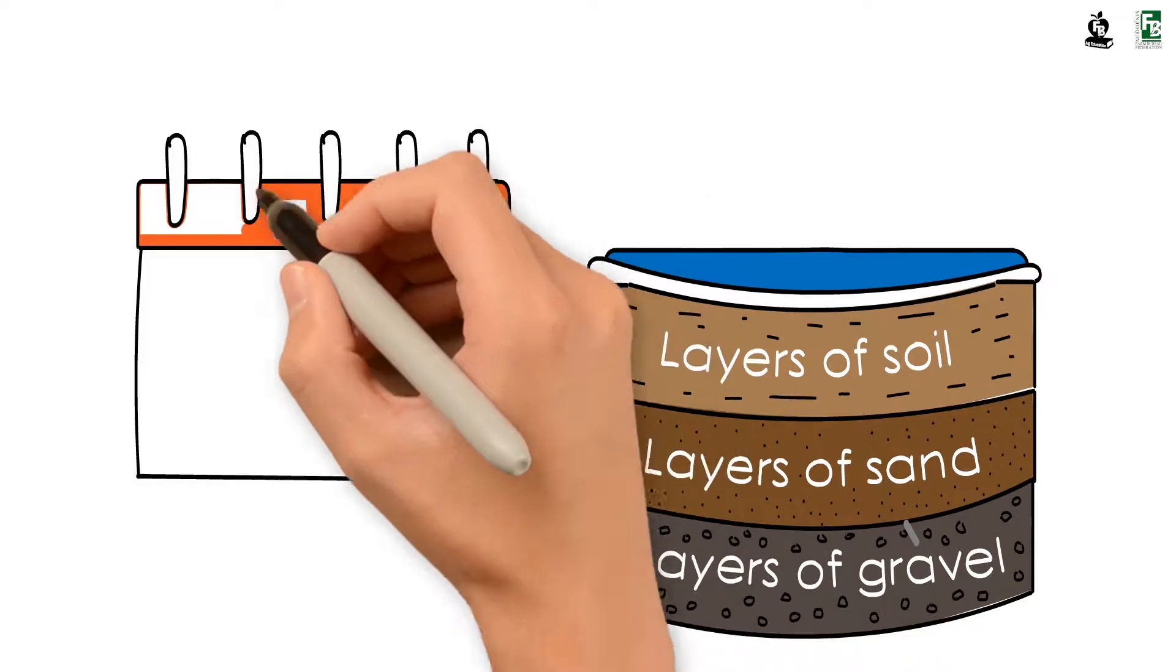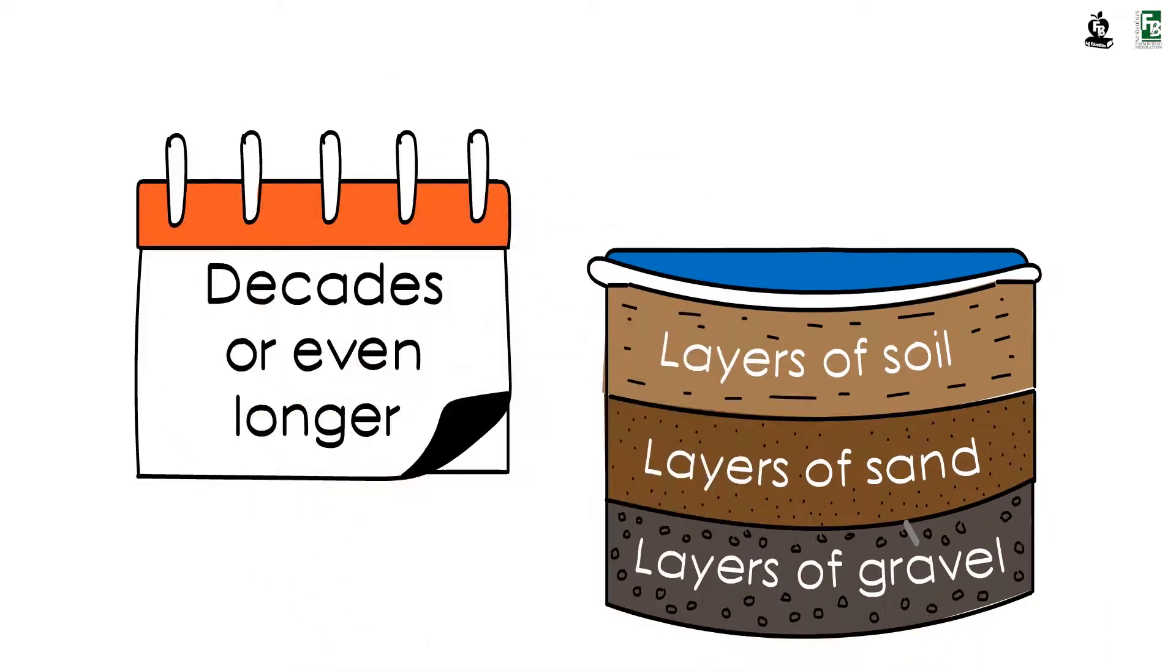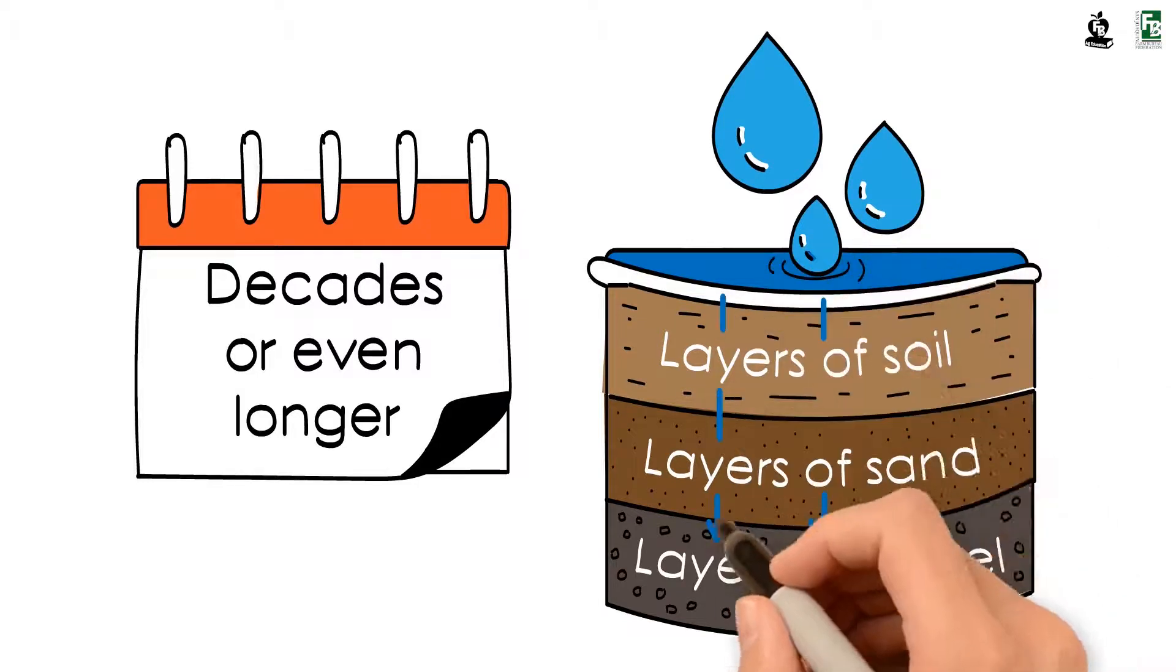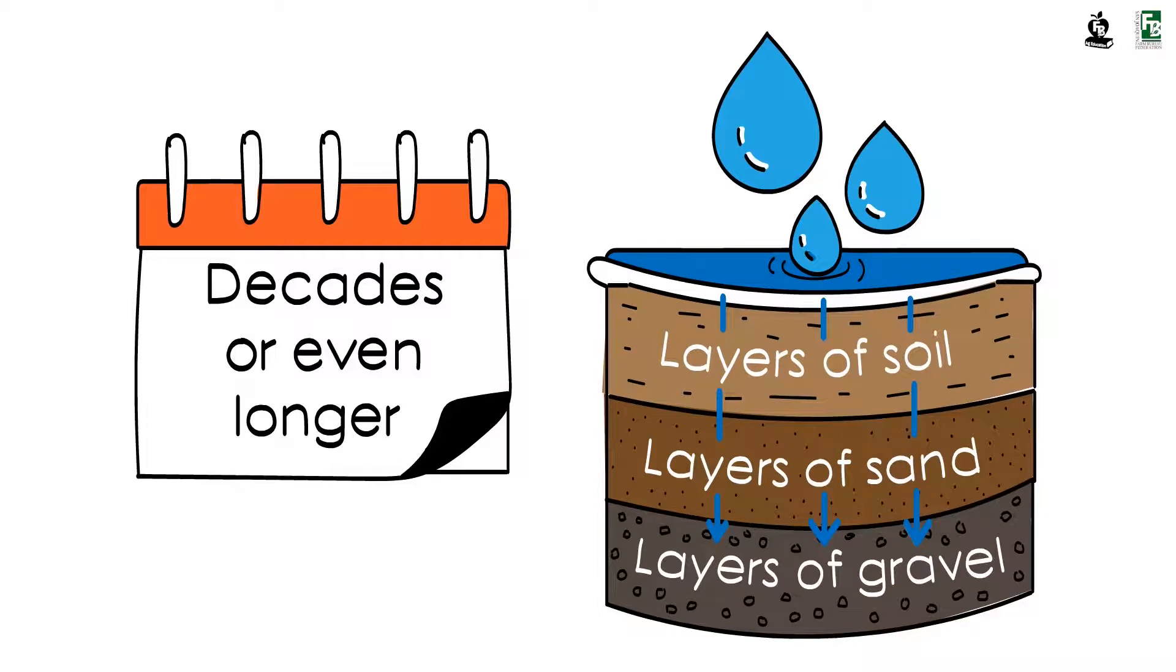In some locations, water in aquifers may have taken years, decades, or even longer to get trapped among the layers of earth as rain, river seepage, and floodwater slowly seep through the porous soil and rock on the surface.